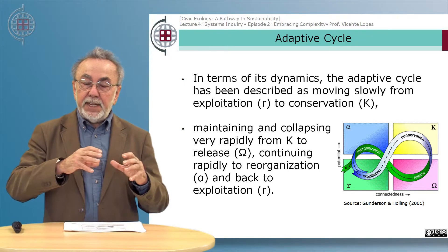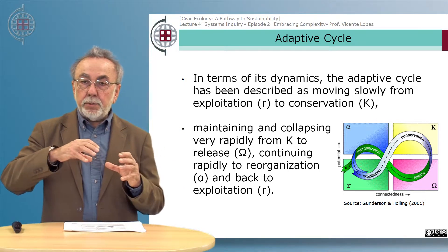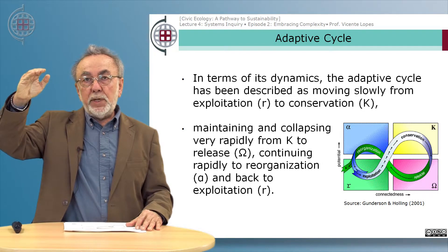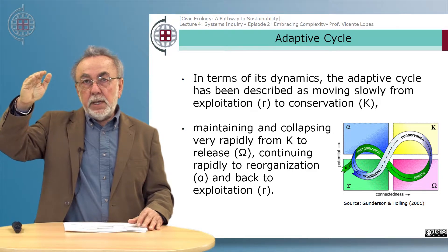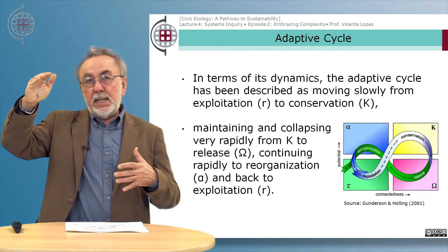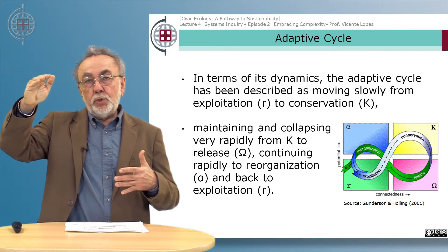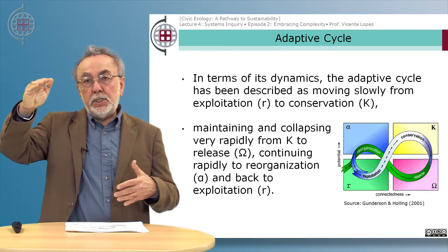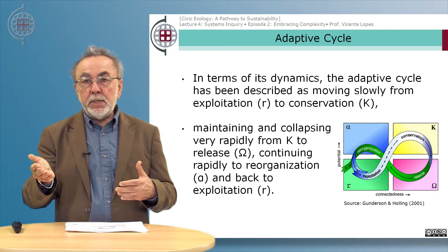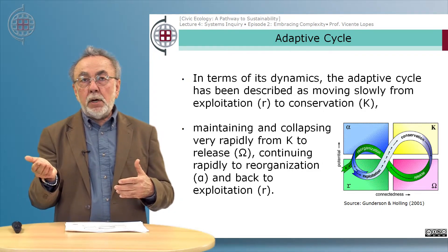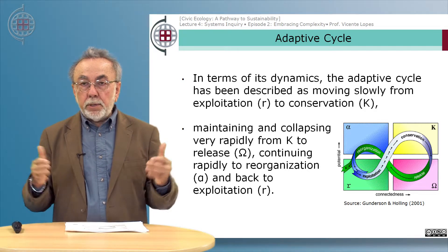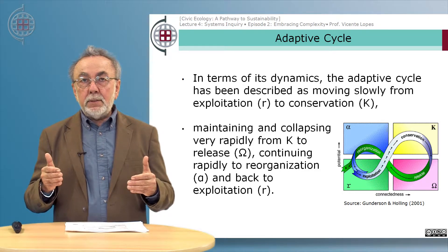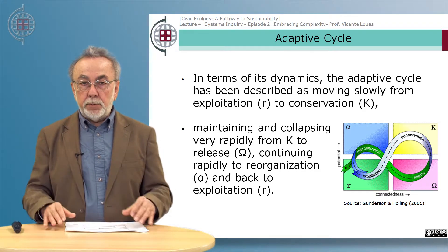You can imagine it starting in the R phase — a phase of exploitation — then slowly moving to a state of maturity called conservation, a very stable condition. Then if the system does not develop adaptive capacity mechanisms to cope with external or internal disturbance, the system can break down and collapse. Once the system collapses, it can release all the resources it had under control, giving an opportunity for opportunists to move in and use those resources to reshape and renew the system.